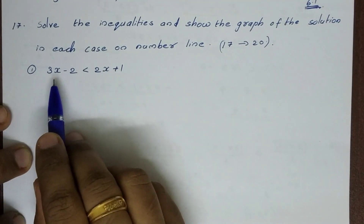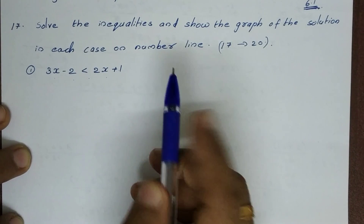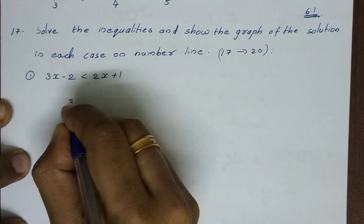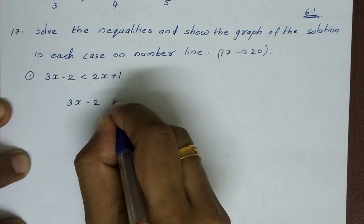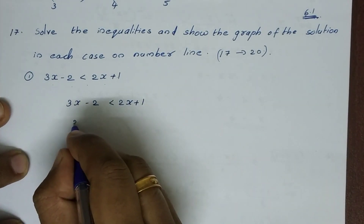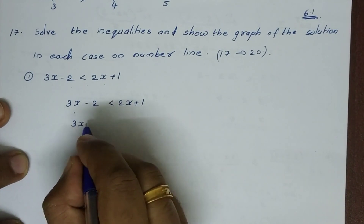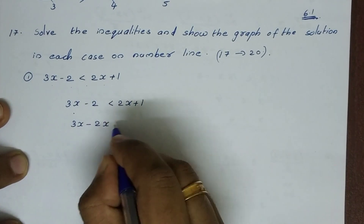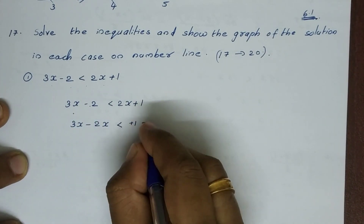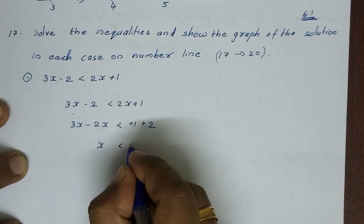First question: 3x minus 2 is less than 2x plus 1. So, 3x minus 2 is less than 2x plus 1. We move x terms to one side: minus 2x, so we have x is less than plus 1 plus 2. So, x is less than 3.